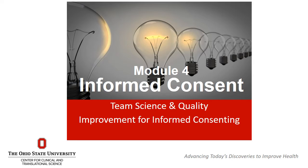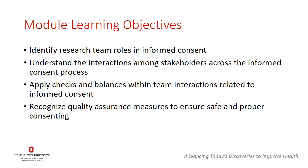In this module, we're going to review some of the key relationships between stakeholders involved in the informed consent process. Our learning objectives for this module are to identify the different roles involved in consenting within the research team, to understand the interactions among stakeholders across the informed consent process, to apply checks and balances within team interactions related to informed consent, and to recognize quality assurance measures to ensure safe and proper consenting.